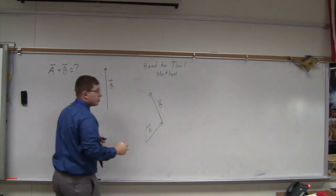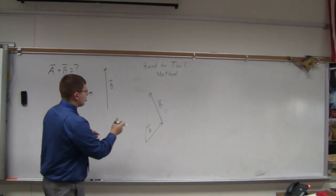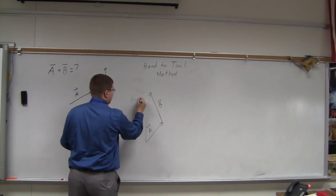all I'm going to do is connect the empty tail to the empty head. That should be a straight line. It looks something like that. And so this green line right here is A plus B.